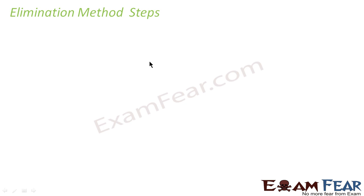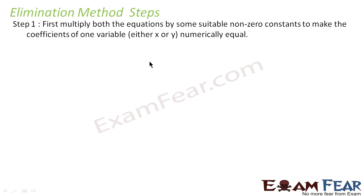Let's now understand the elimination method. We have learned the substitution method, where we write the value of x in terms of y and then use that value in the other equation. Now let's understand the elimination method. In elimination method, we first multiply both equations by some suitable non-zero constant to make the coefficient of one variable numerically equal.